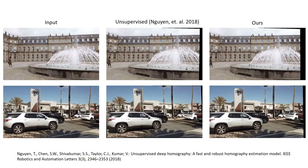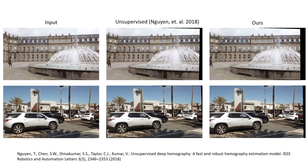If the moving object becomes larger, Nguyen's method fails more severely. In these examples, Nguyen's method cannot find what to base on for alignment. In comparison, our method automatically removes the foreground and aligns the background robustly.